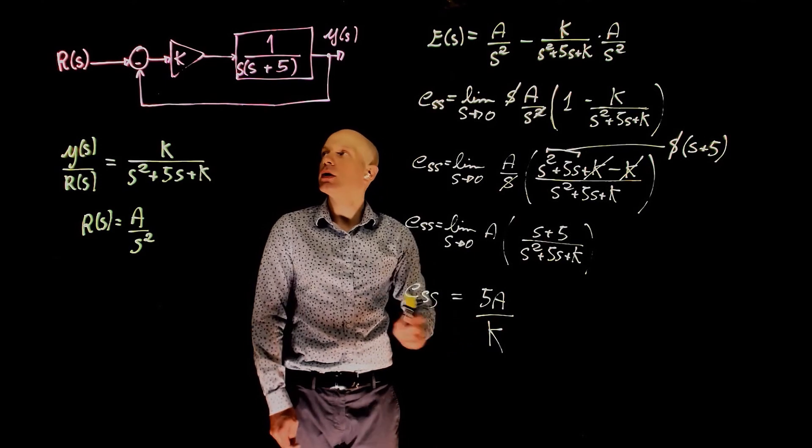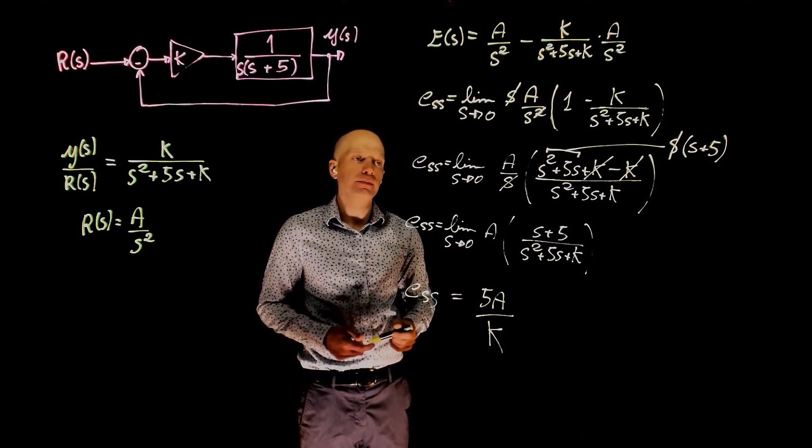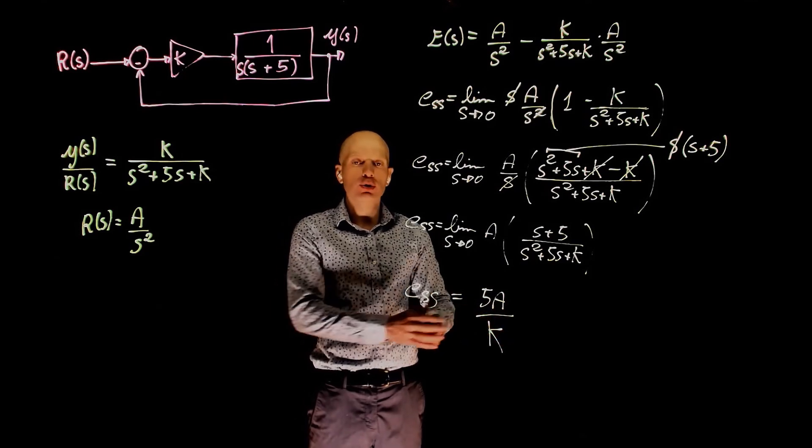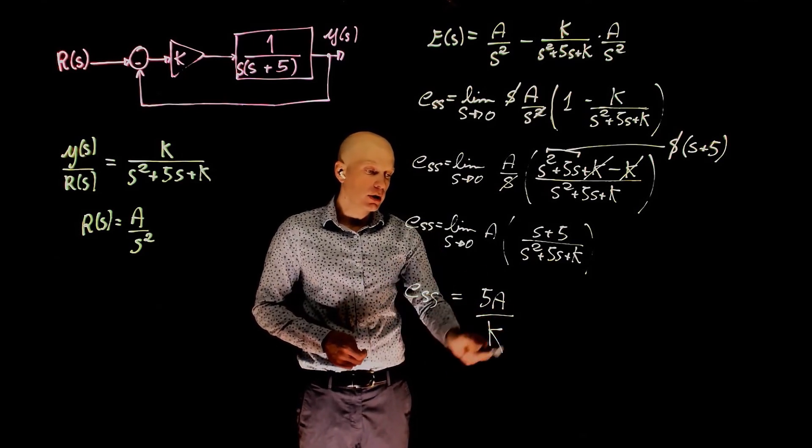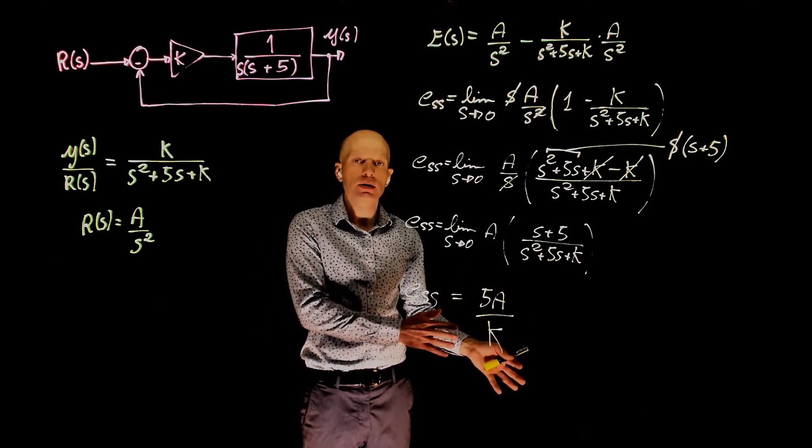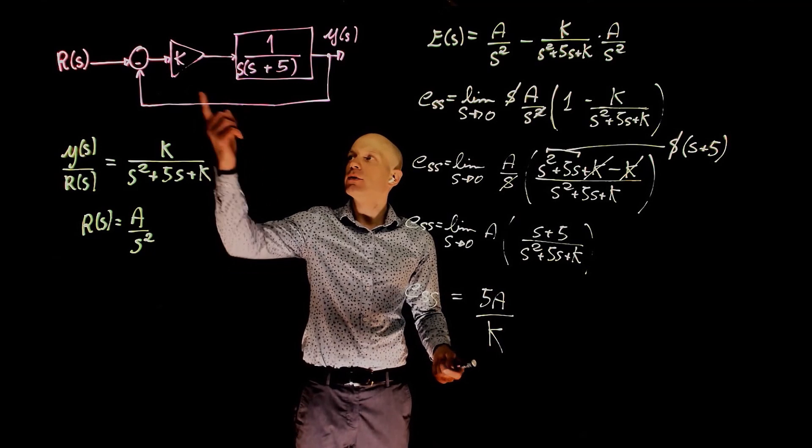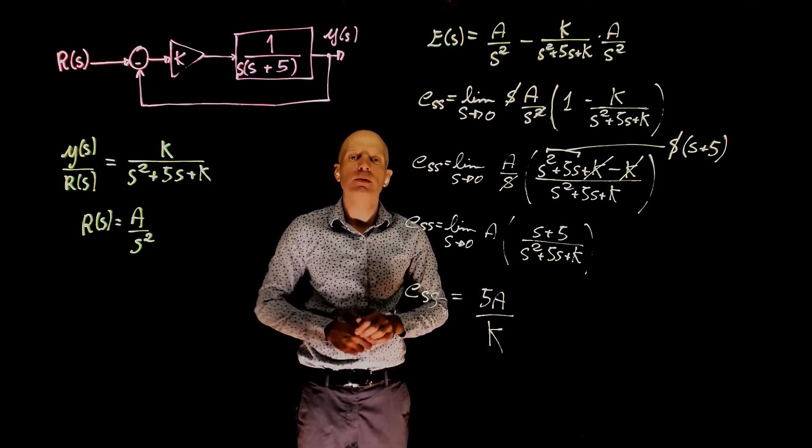Interestingly, the higher k, the higher our control gain, the lower the steady state error. Now let's see what the effect of this control gain is on the percent overshoot. Here, clearly, we see that as we increase k, the steady state error decreases. But it's very likely that if we keep increasing k, the overshoot will also increase. So let's analyze that aspect of the problem now.